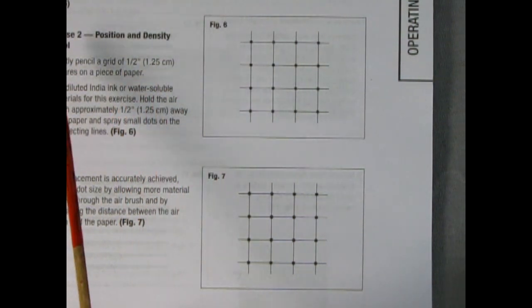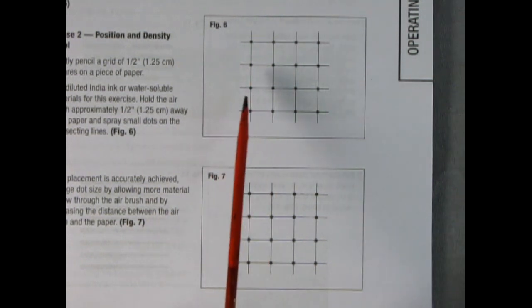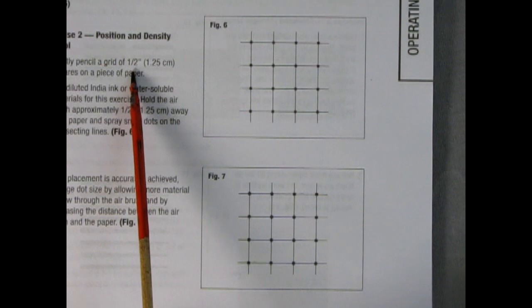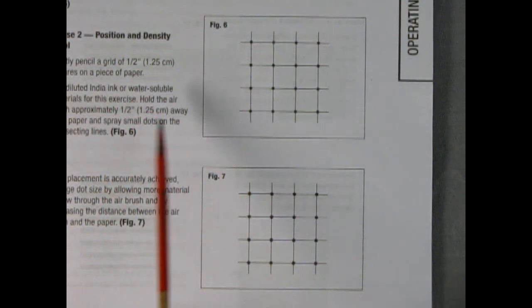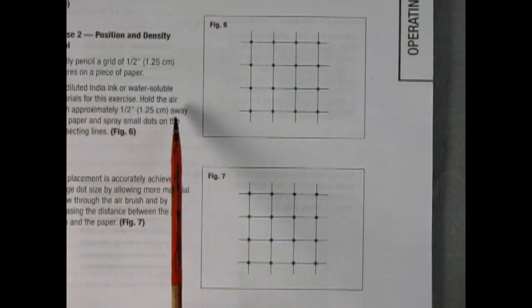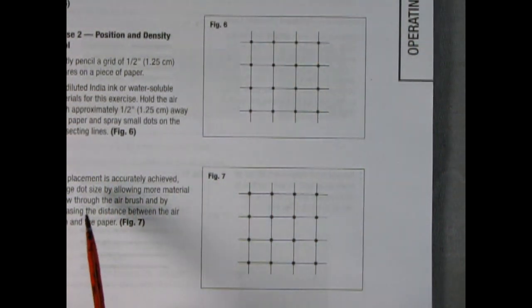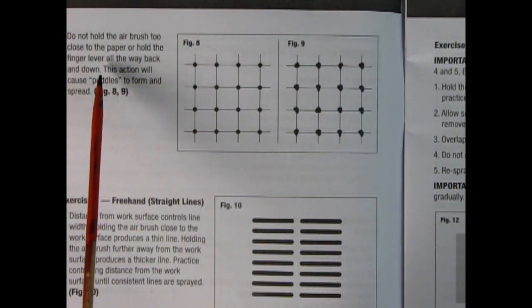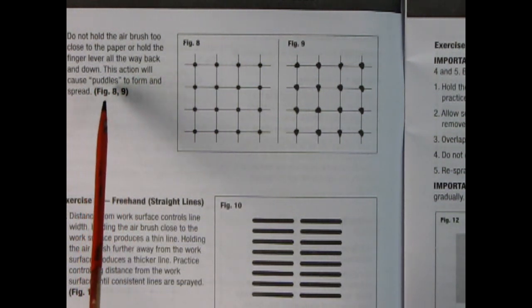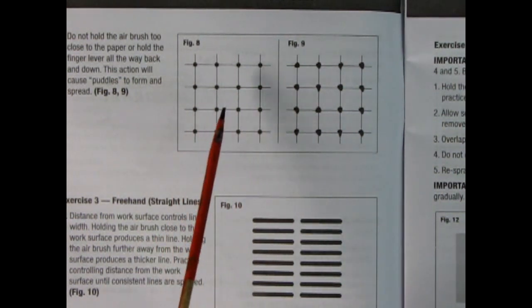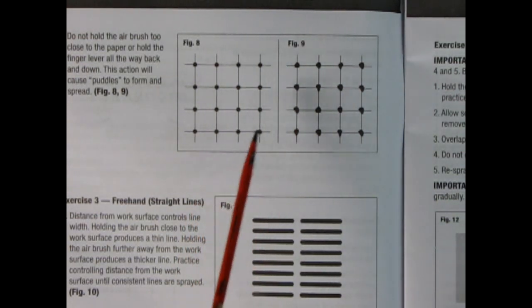The instruction book shows two exercises. First was spray painting with correct and incorrect technique. Second is position and density control. Get a piece of paper and lightly pencil a grid of half inch squares. Use diluted India ink or water soluble materials. Hold the airbrush approximately half an inch from paper and spray small dots on the intersecting lines. After placement is accurately achieved, increase dot size by allowing more material to flow and increasing distance between airbrush and paper. Don't hold too close or pull the lever all the way back, this will cause puddles to form and spread.